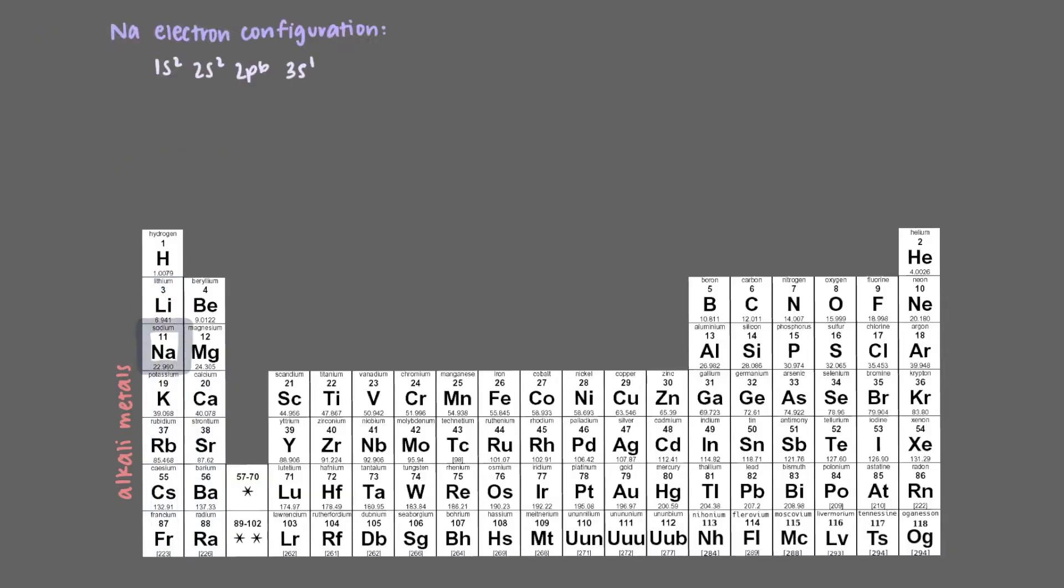For example, sodium's electron configuration is 1s2, 2s2, 2p6, 3s1. What is the correct electron configuration for the sodium ion, Na+?